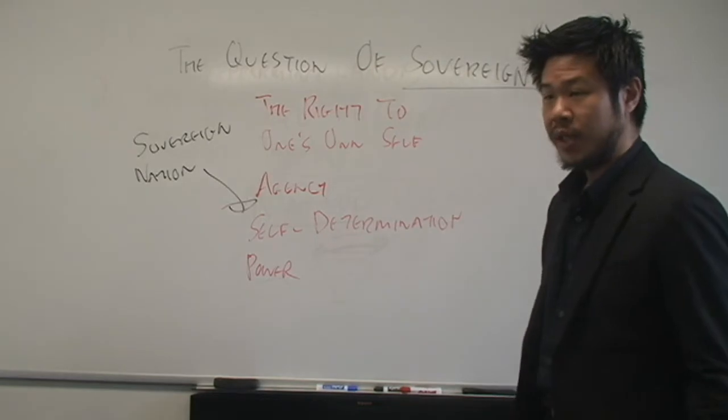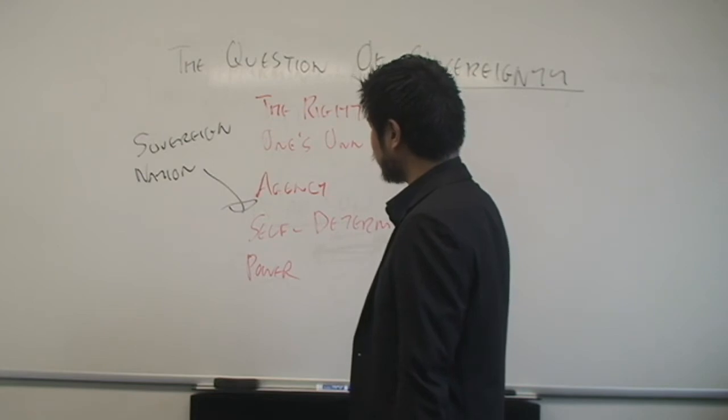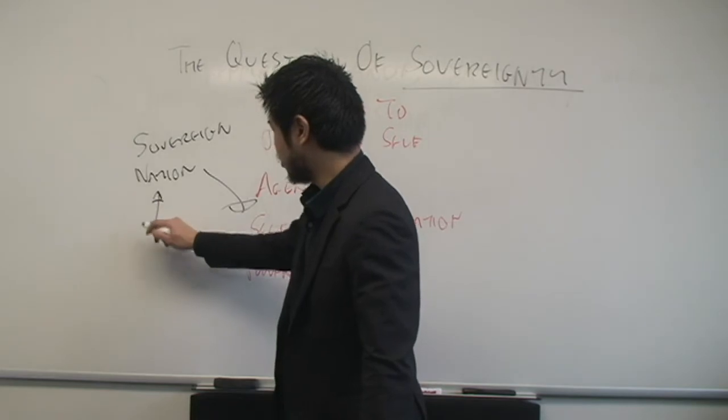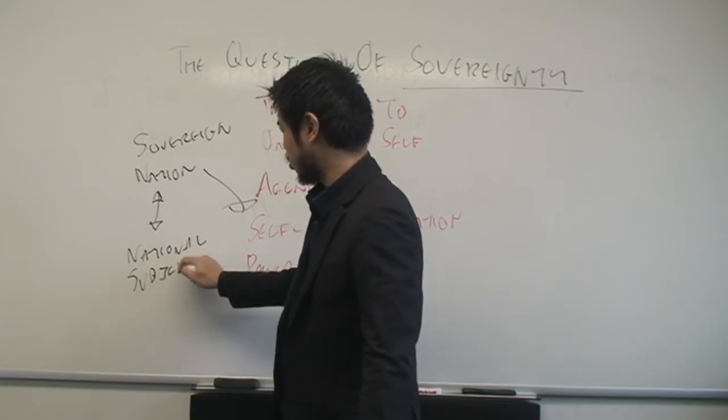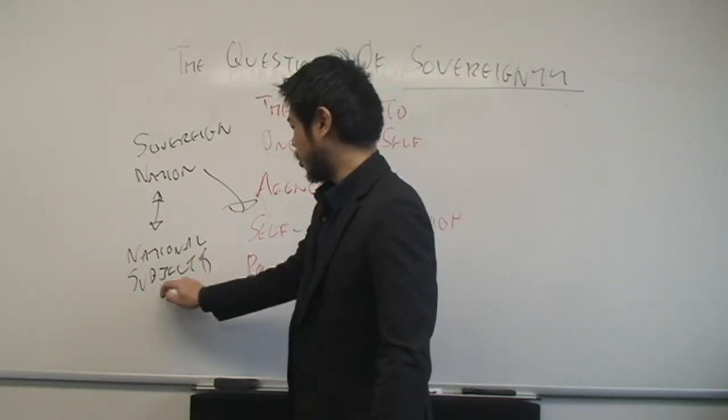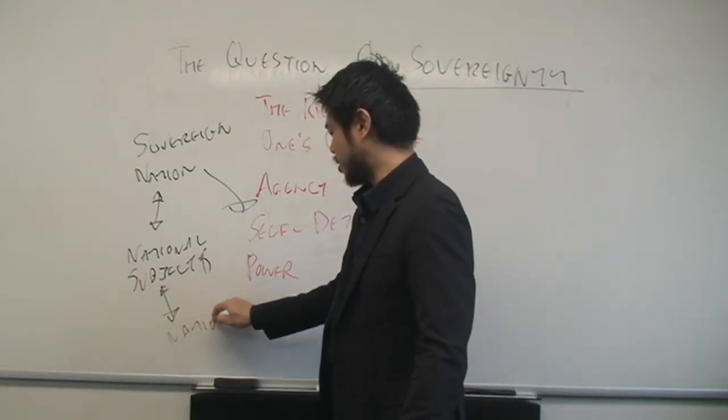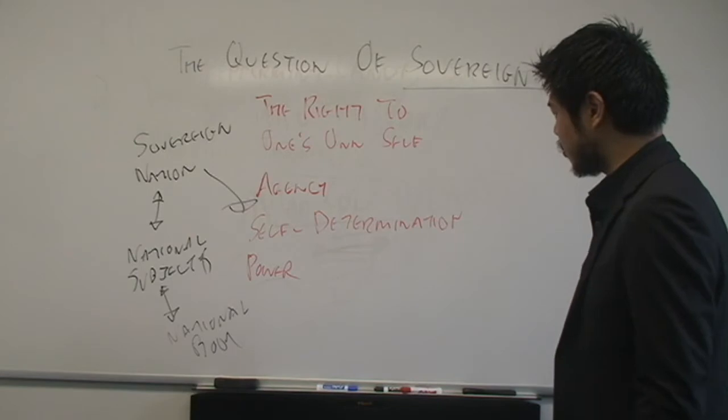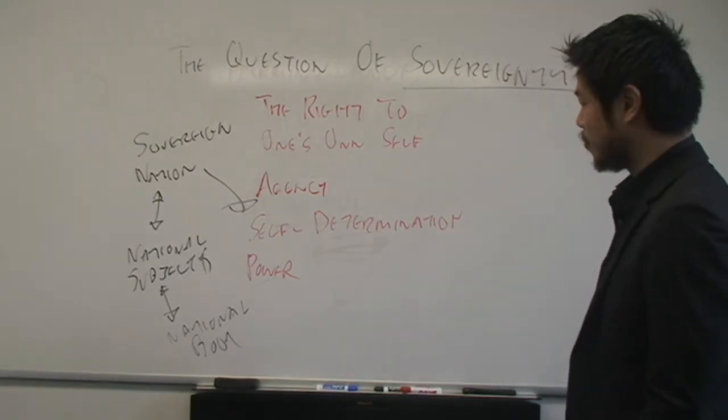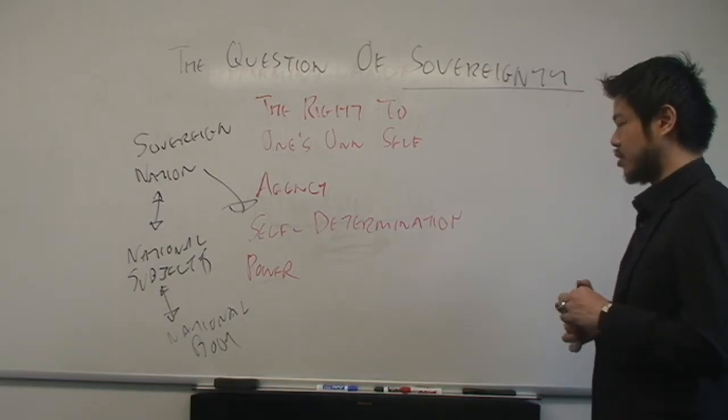We probably hear sovereign in everyday language the most when we talk about sovereign nation, right? Which means that a country has the right to self-determine, to self-govern, independence. Colonialism is when a nation does not have sovereignty. That's precisely where you see that metaphor, again, where the national subject, the citizen, has sovereignty over her or his body the same way as a unit of the national body, the country. It's a metaphor that extends to both.